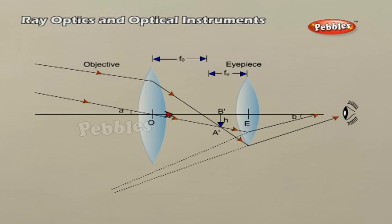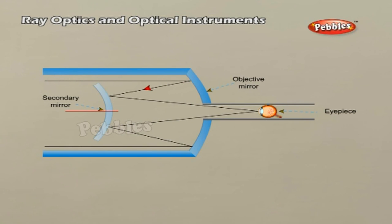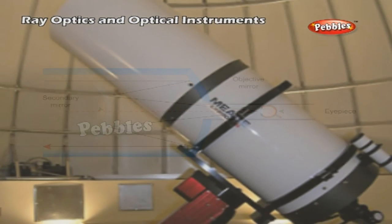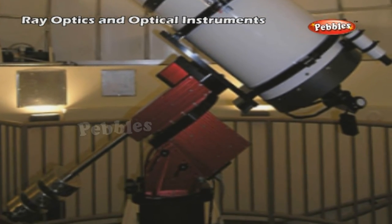Telescope. The telescope is used to provide angular magnification of distant objects. The objective has a large focal length and a much larger aperture than the eyepiece. Light from distant objects enters the objective and a real image is formed in the tube at its second focal point. The eyepiece magnifies this image, producing a final inverted image. The magnifying power m is the ratio of the angle beta subtended at the eye by the final image to the angle alpha which the object subtends at the lens or the eye. In this case, the length of the telescope tube is f_O plus f_e.